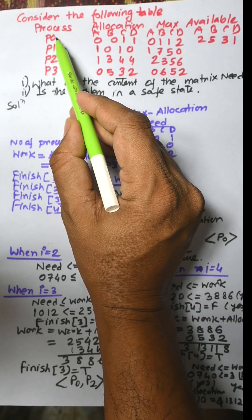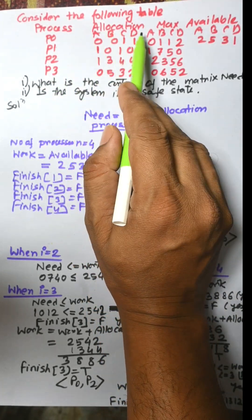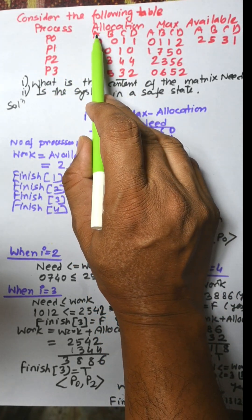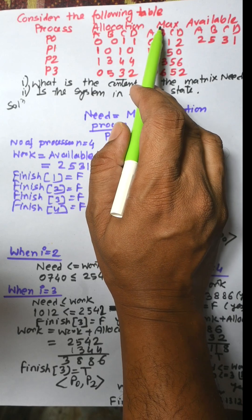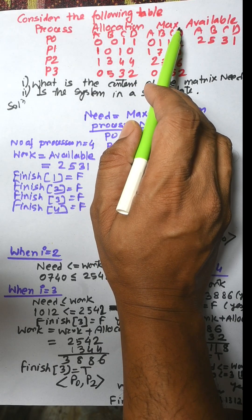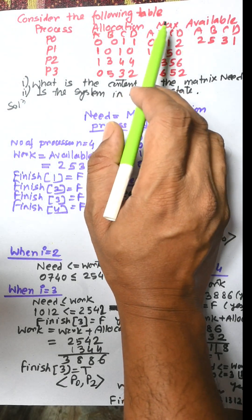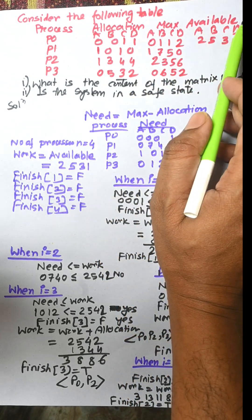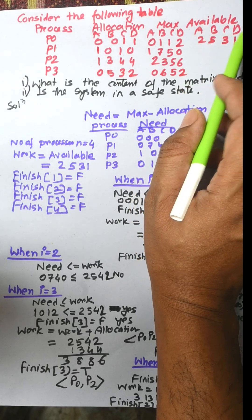Processes are given P0, P1, P2, P3 with allocation for four resources A, B, C, D. A max 2D matrix is given, and available resources are listed for every resource.